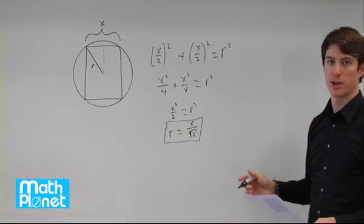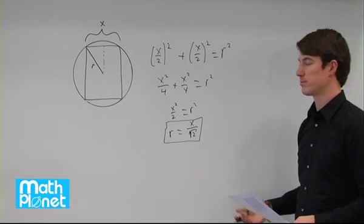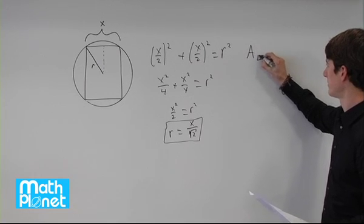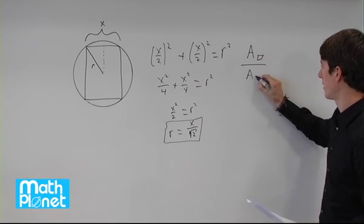Now, all we need to do is write the ratios in terms of one variable, x. So now we just want to find the ratio of the area of the square to the area of the circle.